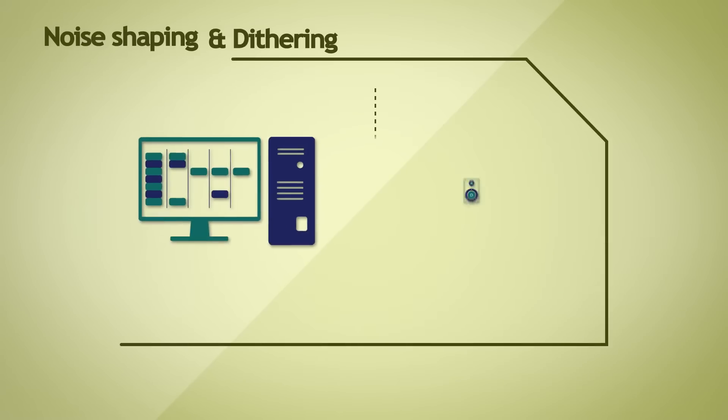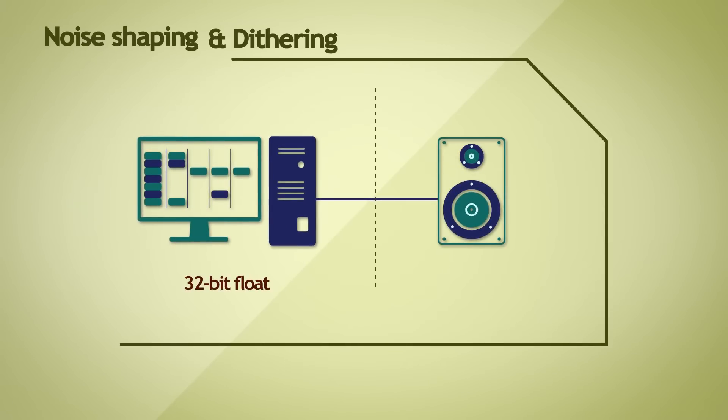Dithering, for example, is an absolutely integral part of the process of bit reduction, especially when reducing the bit depth to 16 bits. Without it, there could be unexpected distortion components and artifacts in your audio file. To preserve the integrity of the audio file, you have to dither.